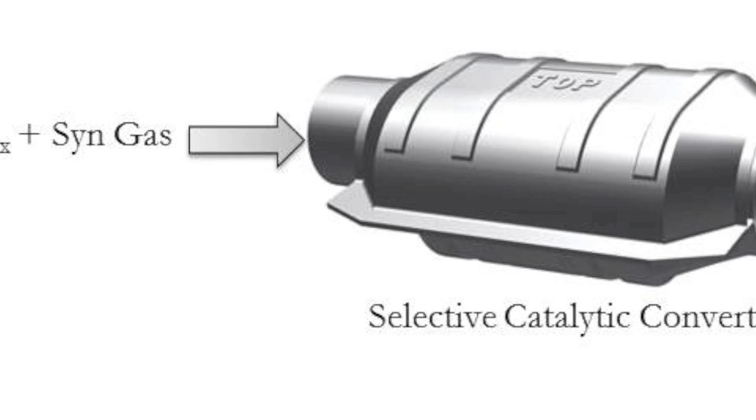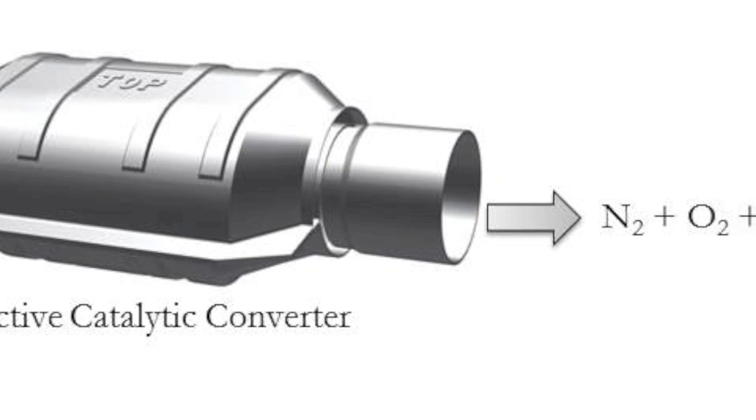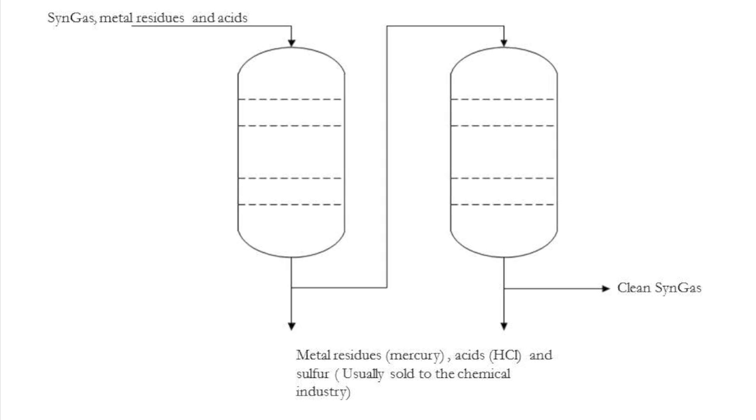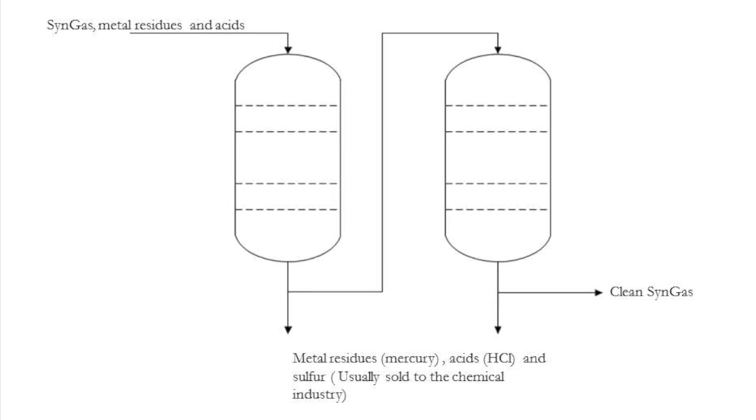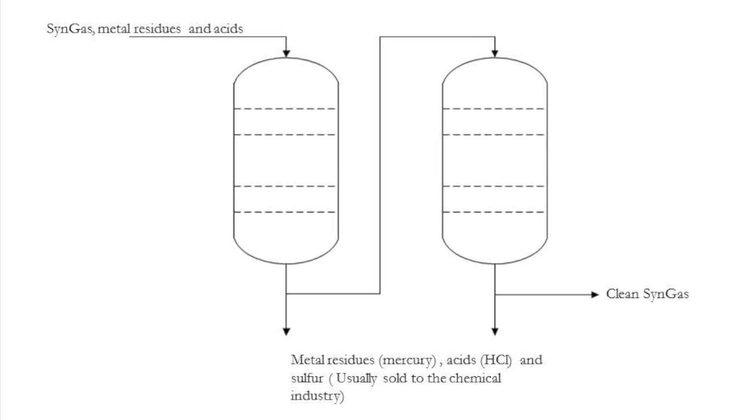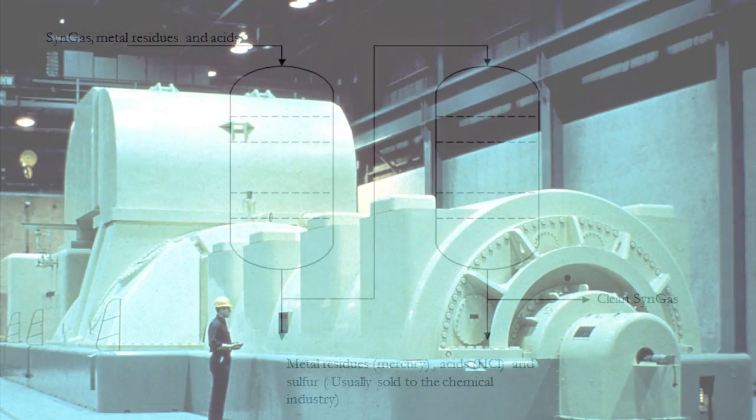By passing the gas through a series of catalytic converters, any traces of nitrogen oxide will be removed. This step is then followed by a series of chemical scrubbing and stripping to remove vaporized mercury residues and acids. Now, the gas will be clean and ready to use for energy generation.